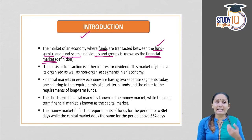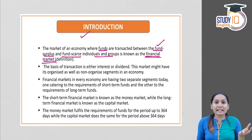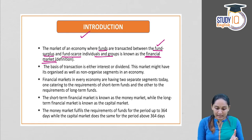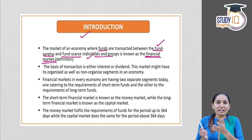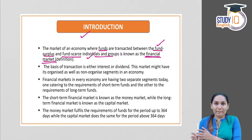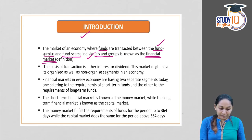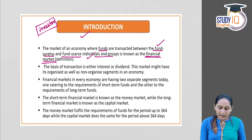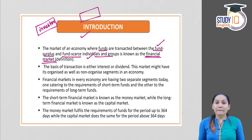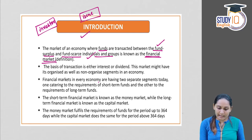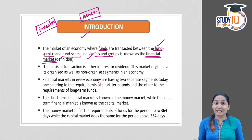Those individuals who have a surplus of funds transact these funds to fund-scarce individuals or groups — that is, those who have surplus funds invest in those companies or entities where there is a shortage or scarcity. The one who has surplus funds is called the investor, and the one who has a scarcity of funds is called the issuer of financial instruments or money market instruments.